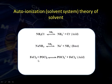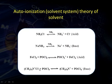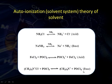When FeCl₃ is dissolved in POCl₃ (the solvent), it forms POCl₂⁺ — increasing the acidic part, so FeCl₃ behaves as an acid in POCl₃. When tetramethyl ammonium chloride is dissolved in POCl₃, the concentration of POCl₄⁻ (the basic part) increases, so tetramethyl ammonium chloride behaves as a base in POCl₃.